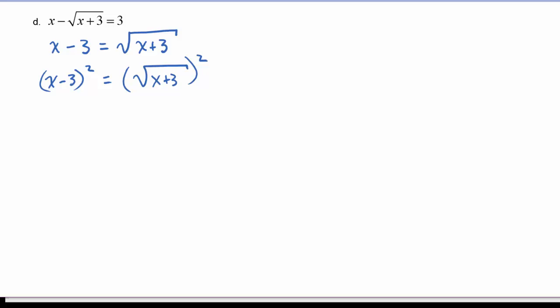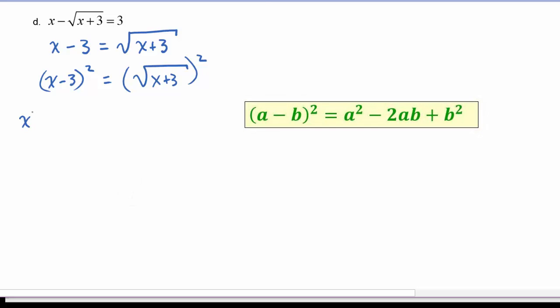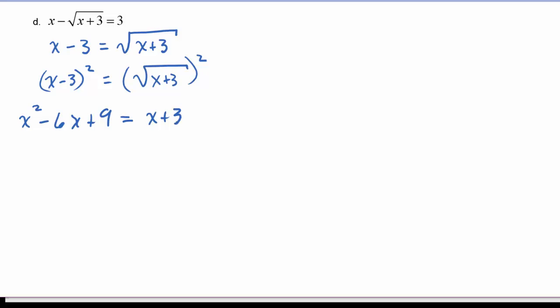On the left hand side, we get x squared minus 6x plus 9, and on the right hand side, we get x plus 3. We're going to simplify our equation by combining like terms, so we're going to bring the x to combine with the negative 6x and the 3 to combine with the 9. So now we have x squared minus 7x plus 6 is equal to 0.